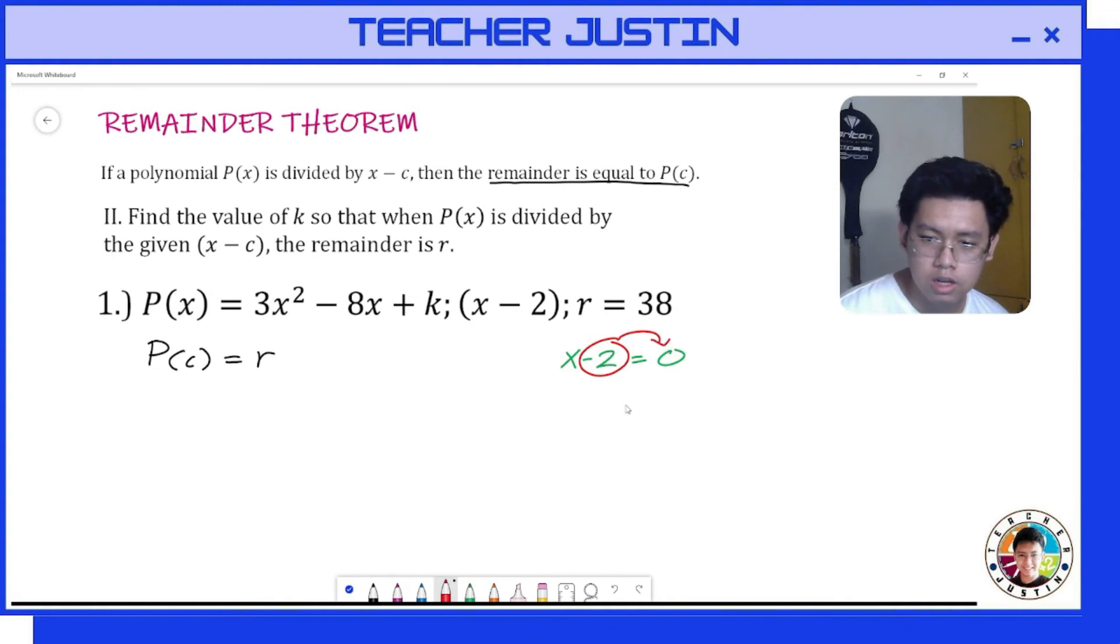To our polynomial 3x² - 8x + k, let's replace our equation to P(c), giving us P(2) = our remainder, which is 38. So we will have this equation. Now let's replace all variable x by 2.